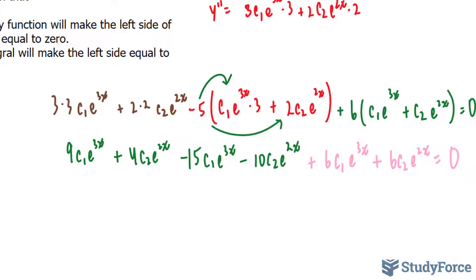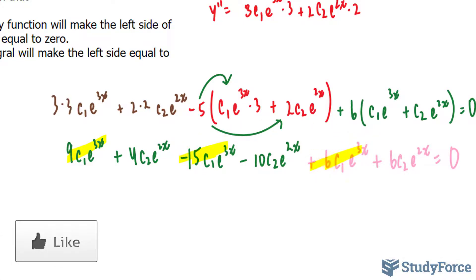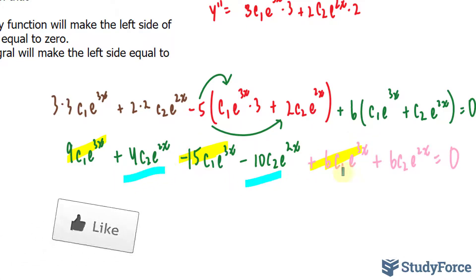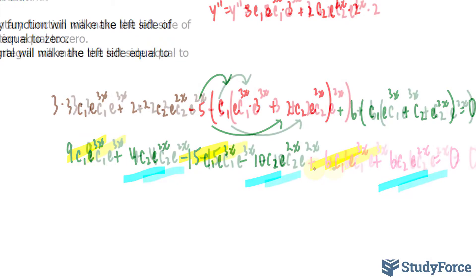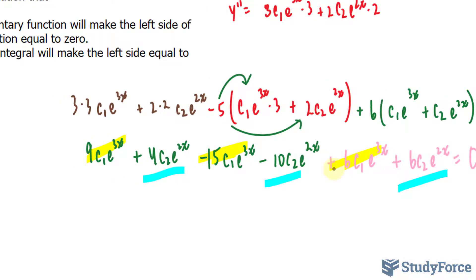Now we collect like terms. Considering the coefficients of the e^(3x) terms: 9 minus 15 equals negative 6, and negative 6 plus 6 equals 0. For the e^(2x) terms: 4 minus 10 is negative 6, plus 6 gives us another 0. So the left side equals 0, which proves part A.